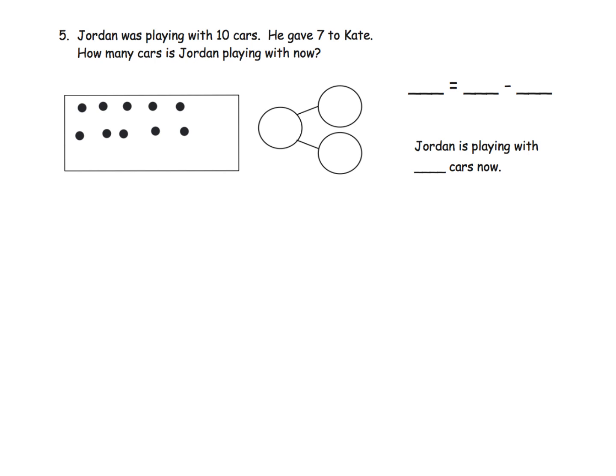He gave 7 to Kate. So let's cross those off. 1, 2, 3, 4, 5, 6, 7. And so the question is, how many are left over? How many cars is Jordan playing with now? Well, we've got those 3 cars left over. So what is our number bond going to look like? We've got a 10. We've got a 7. And then our missing value is a 3.